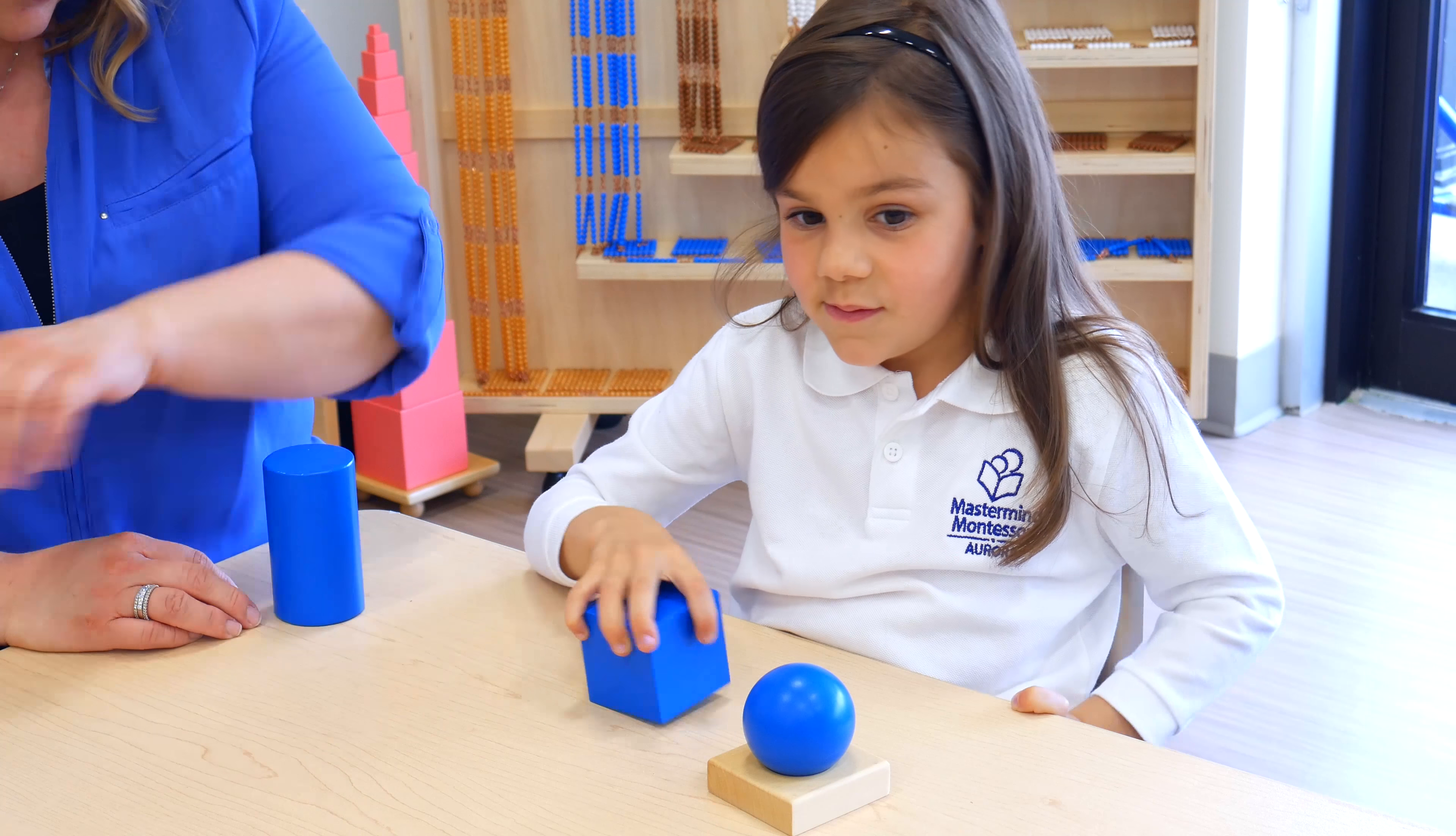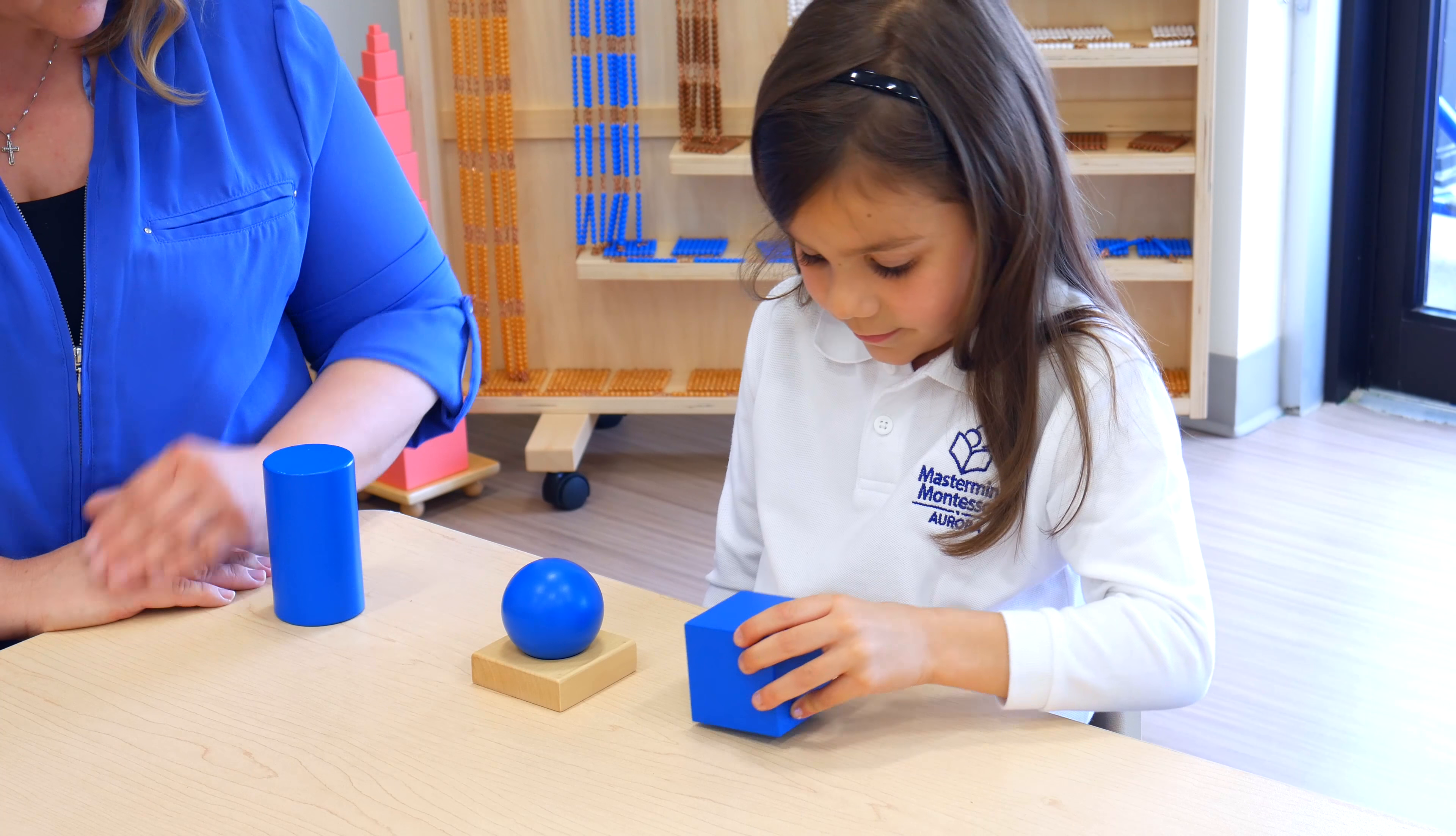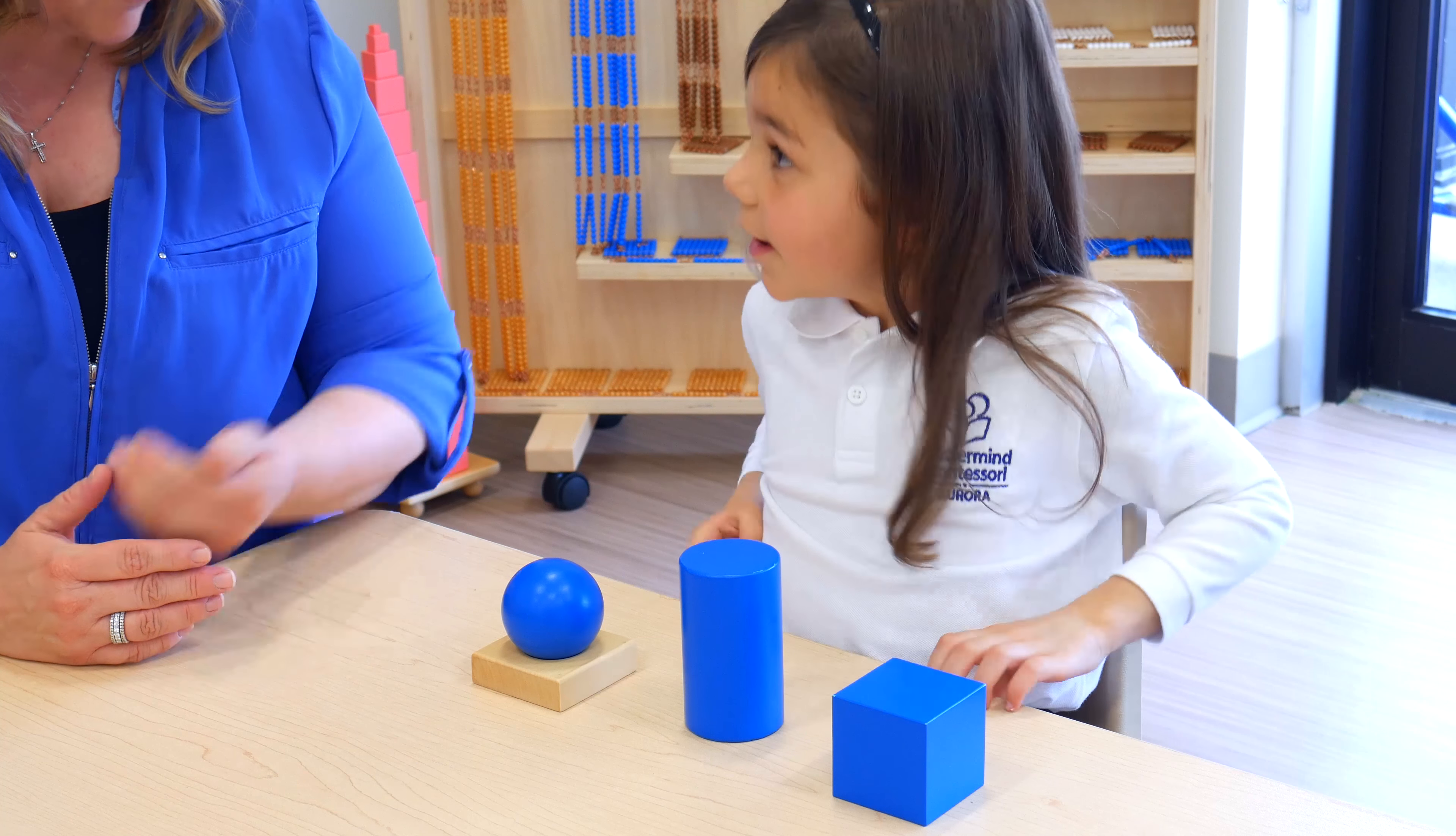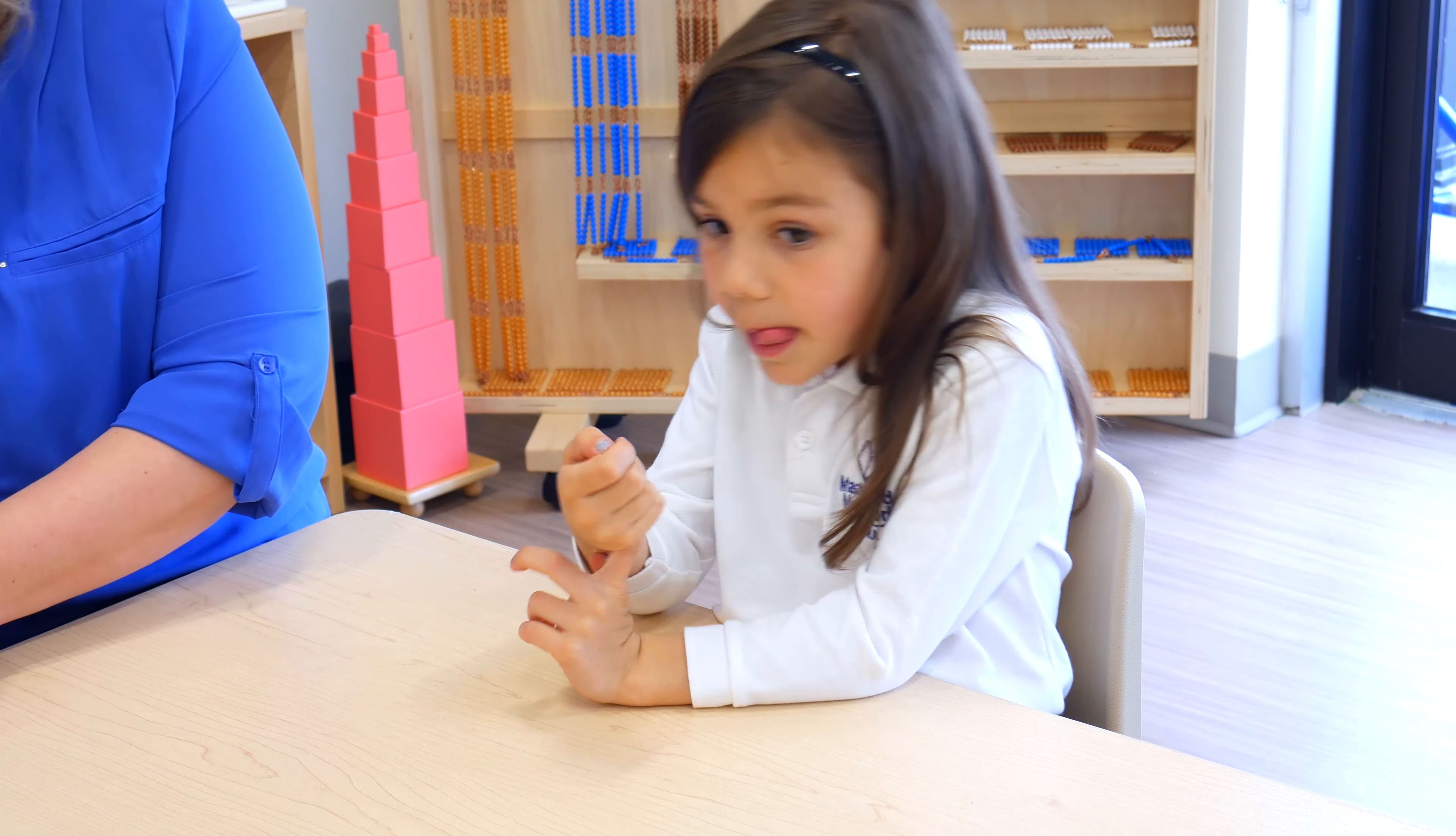So today we're going to learn the names of some geometric solids. All right, let's start with this one. This is a sphere. Can you say that? Good job. And I want you to feel it all around. Tell me what it feels like. Can you think of anything that looks like this? Classroom? Yeah, it does, doesn't it?